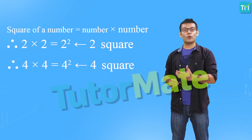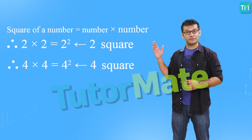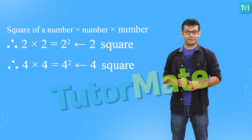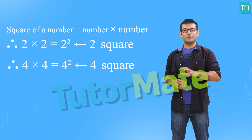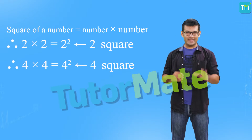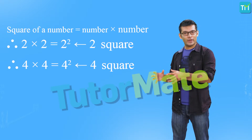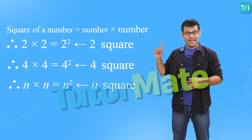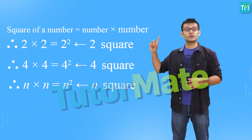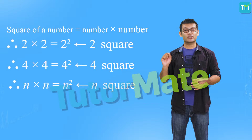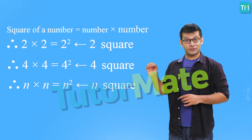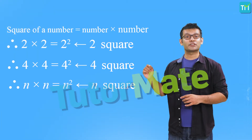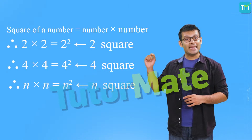Similarly, 4 x 4 can be written as 4 raised to 2, and the number can be called 4 square. Basically, if we have a number n and we want to find its square, then its square will be n x n, that is n raised to 2, which is called n square. And if you compare it to the geometrical square, then n square would be the area of the square that is formed with the side n.